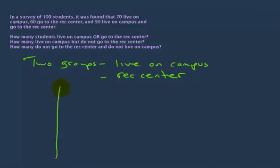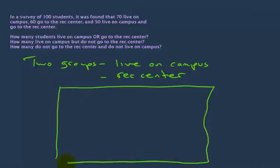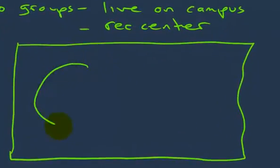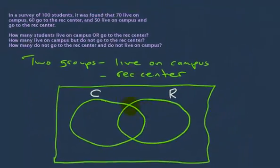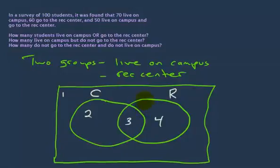Let's draw the big rectangle, which represents everybody — whether they go to the rec center or whether they don't. And we have our two circles. This first circle I'll label C for living on campus, and this one I'll call R for rec center. Now how many regions do we have? We have one, two, three, and four — four overall regions that we need to fill out.